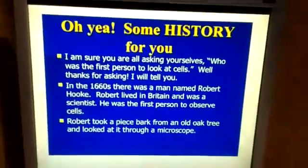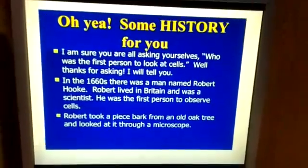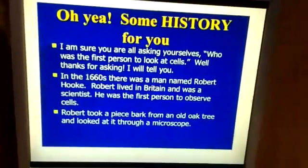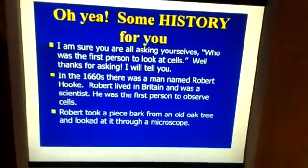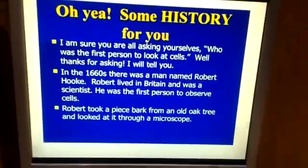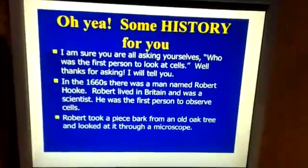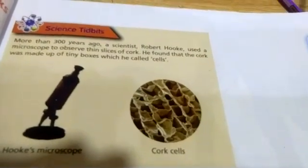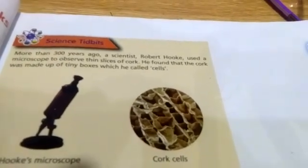Let's have a look at the history. The first person who recognized and defined cells was a scientist named Robert Hooke. He lived in Britain and took a piece of bark from an old oak tree and looked at it through the microscope. He found that the cork was made up of very small packets or units closely packed together, and he called all such units as cells.